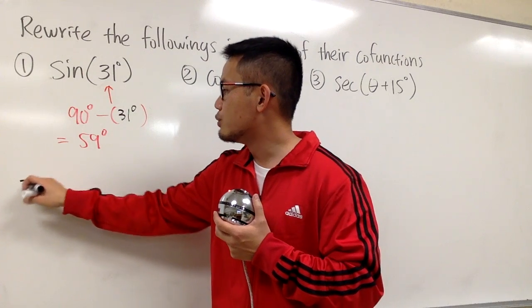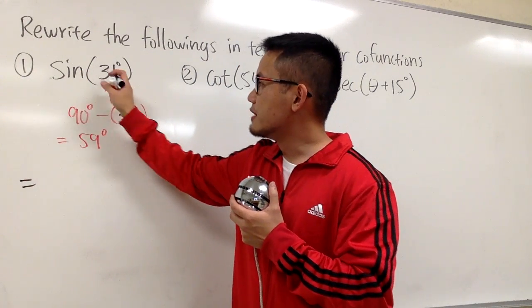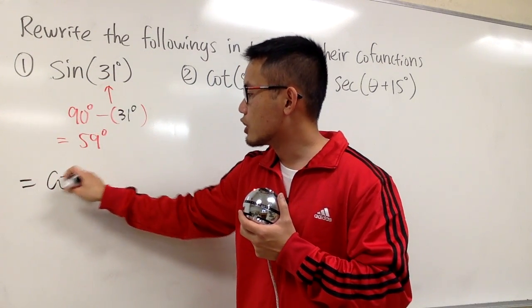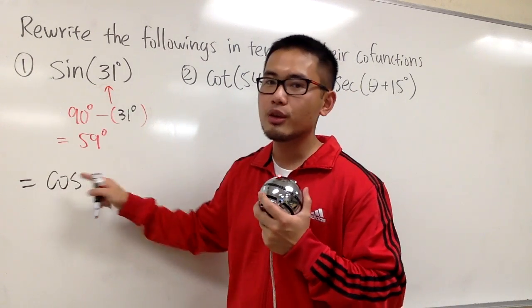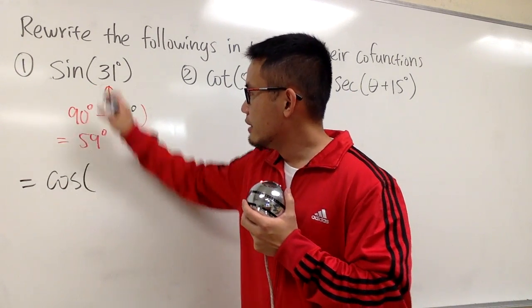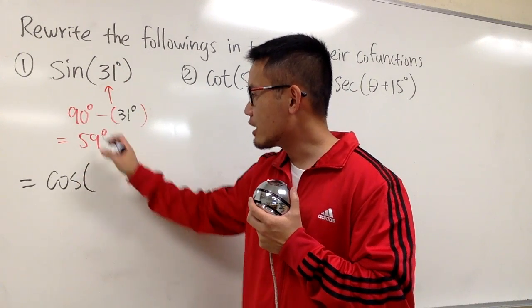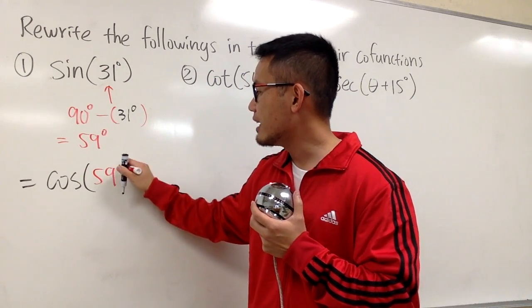So we know this right here. Here, sine of 31 degrees is going to be the same as cosine, and once again, COS stands for cosine, and they are the co-functions. This is going to be the same as cosine of 59 degrees.